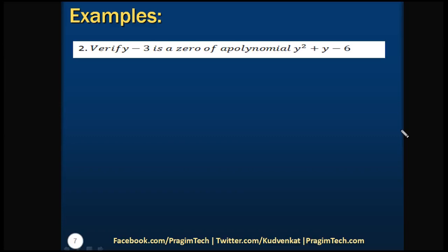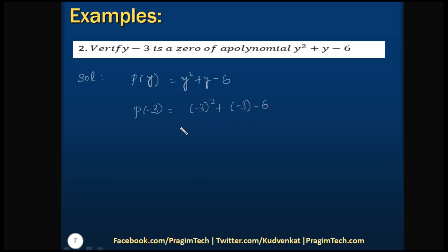Now let's look at the second question: verify that -3 is a zero of a polynomial. That means we have to check whether substituting -3 in the given polynomial makes its value 0. The given polynomial is p(y) = y² + y - 6. Substituting p(-3): (-3)² + (-3) - 6 = 9 - 3 - 6 = 9 - 9 = 0. Therefore p(-3) = 0, which means -3 is a zero of p(y).